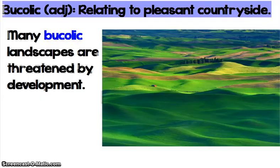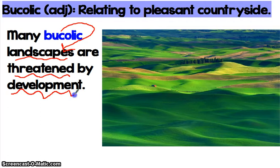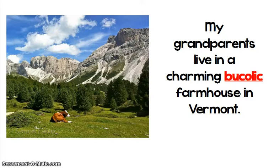Our next word is bucolic. Bucolic is an adjective that basically means relating to very pleasant countryside. Any kind of landscape that is not in the city — that's very beautiful and peaceful to look at — could be described as bucolic. Many bucolic landscapes are threatened by development. Here you can see the adjective bucolic describing the landscape, but the building of houses and development of the environment is threatening the beauty of the natural environment. My grandparents live in a charming bucolic farmhouse in Vermont. Farmhouses are usually located in rural communities, so it is appropriate to describe a farmhouse as bucolic.